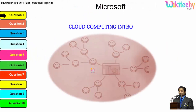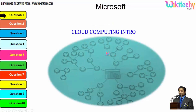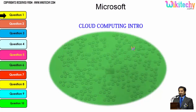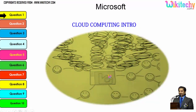Let's talk about the cloud computing introduction. This is a computer which is connected to a server, and this server is monitoring this computer. Once the network becomes bigger, the monitoring becomes tougher for that particular server. If more computers are added, the network grows even larger and the monitoring system becomes really slow.